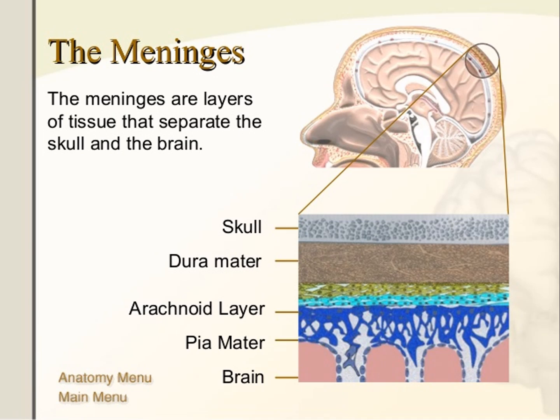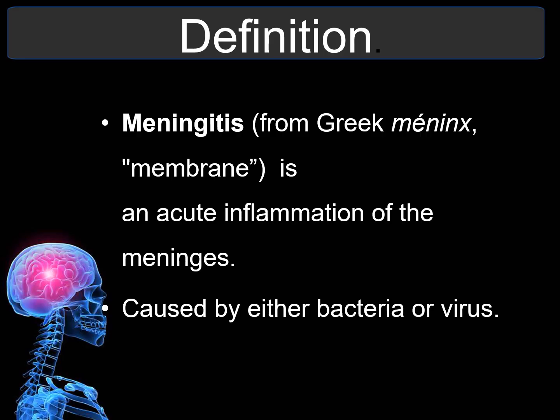Meningitis refers to the layers of tissues that separate the skull and the brain. By definition, meningitis is the inflammation or infection of the membranes — the meninges — that surround the brain and spinal cord. It can be caused by ingestion of poisons or drugs, injections of certain substances, reactions to vaccines, or a pathogen.